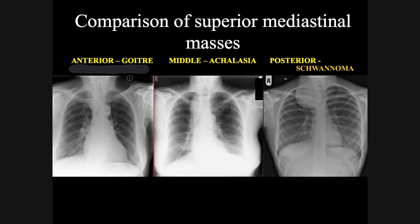This final slide gives an overview of the different types of mediastinal mass seen in the superior mediastinum. Just to recap: the mass lesion that is sharp and then fades at and above the clavicle is due to a goiter or an anterior mediastinal mass. A middle or posterior mediastinal mass has a sharp border above, below and at the level of the clavicle — as seen in achalasia and in this case of a schwannoma.